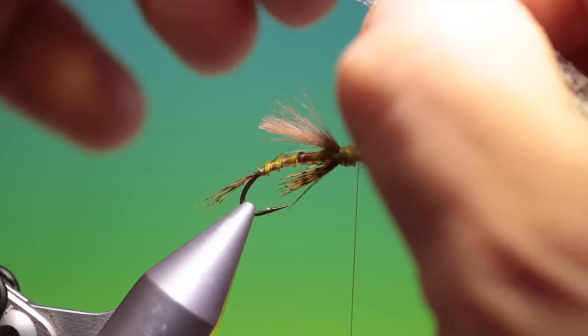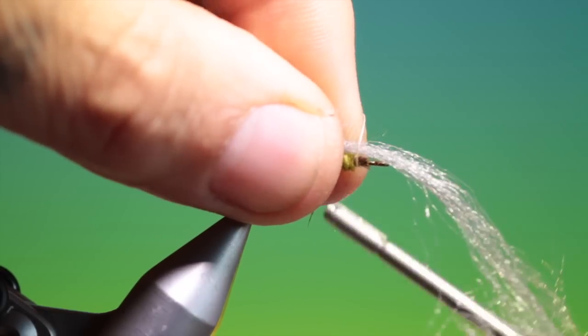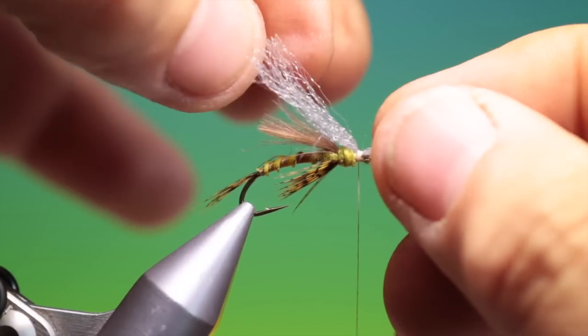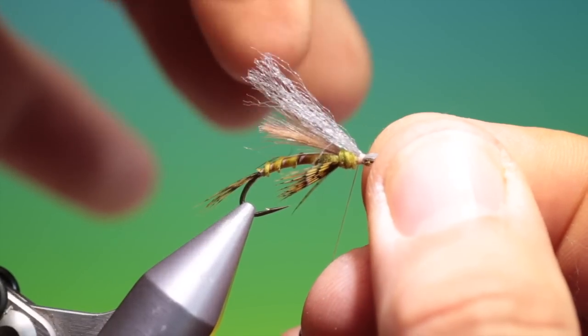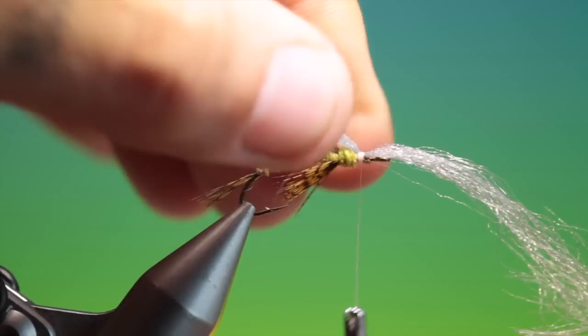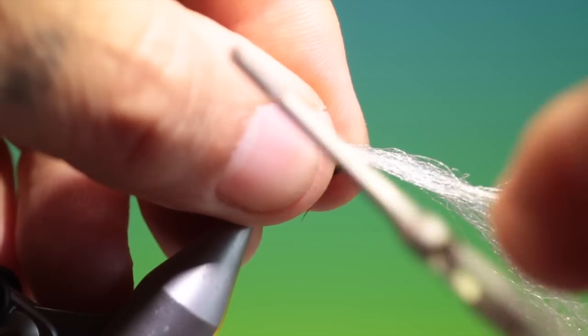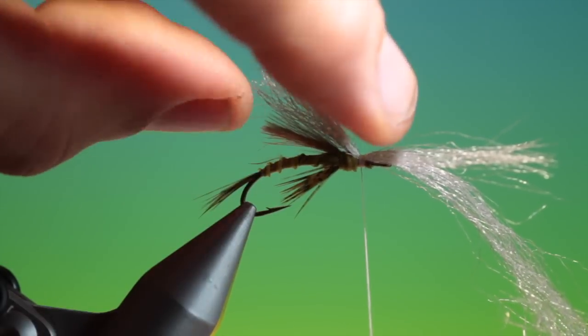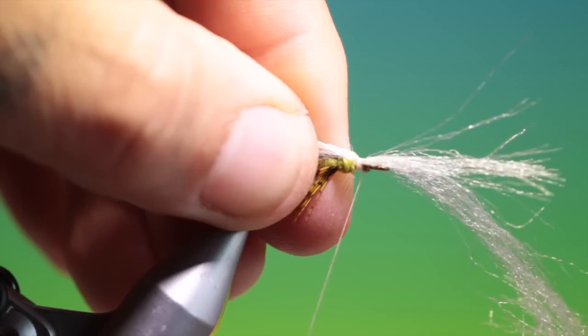Some antron. And this is blue dun antron body wool for the wing. Pull that through to the correct length. It needs to be a little shorter than that. There we are. Then half of a bunch of cream or white antron body wool, or Xelon if you wish, up on top of the blue dun. And we can go forward.